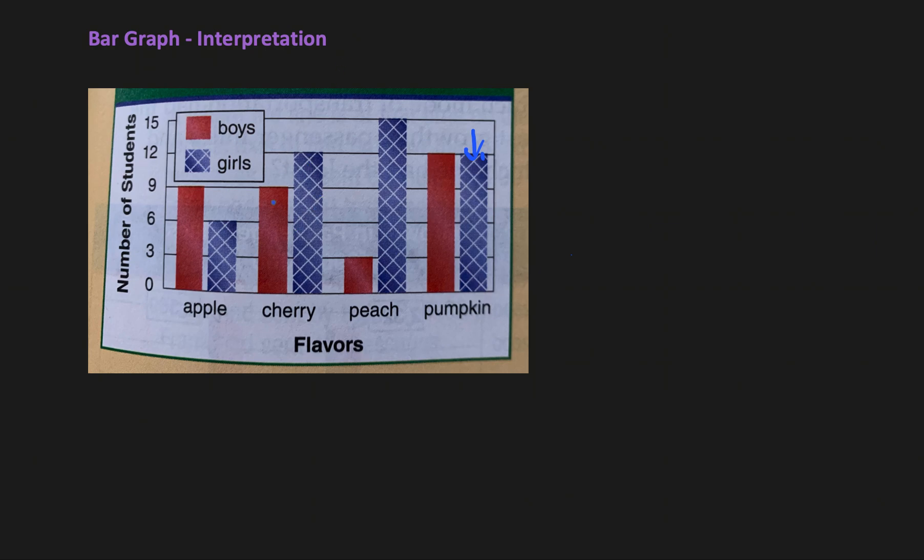And this box here is called keys, and it's important because otherwise, without this key, we wouldn't know what red means and what the blue color means. So keys are really important.